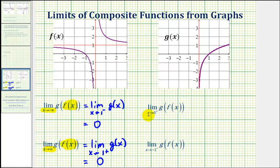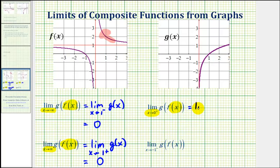Next, we have the limit as x approaches zero from the positive side or right side of g of f of x. We're determining what's happening to f of x as x approaches zero from the right side. Here's the graph of f. As we approach zero from the right side, we're moving along the graph in this direction, and notice how the function values are increasing without bound. These function values become the inputs into our outer function g, which means this is equal to the limit as x approaches positive infinity of the outer function g of x.